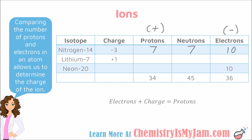For those who like an algebra formula, you can use the fact that electrons plus charge will always equal protons. In this case, we were trying to determine the number of electrons. We knew that the charge was negative 3 and the number of protons was 7. Solving that, you will find out that electrons in this case was equal to 10.